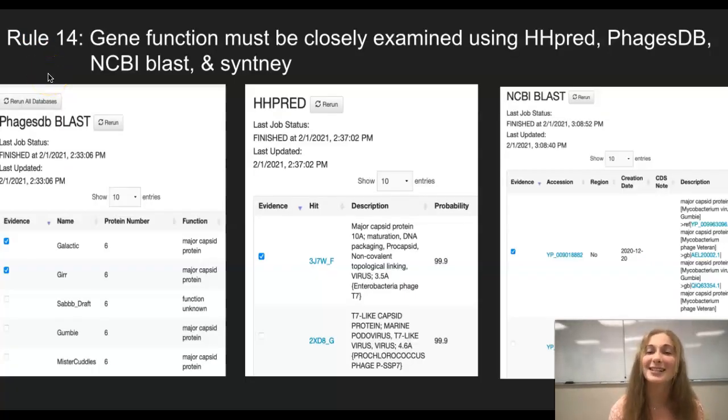Rule 14 talks about the gene's function and how to find it through different databases, like HHPRED, PhagesDB, NCBI BLAST, and SITME. These databases help find the gene's function, whether it's known or unknown. And the databases can sometimes disagree with each other or agree with each other, like in this situation.